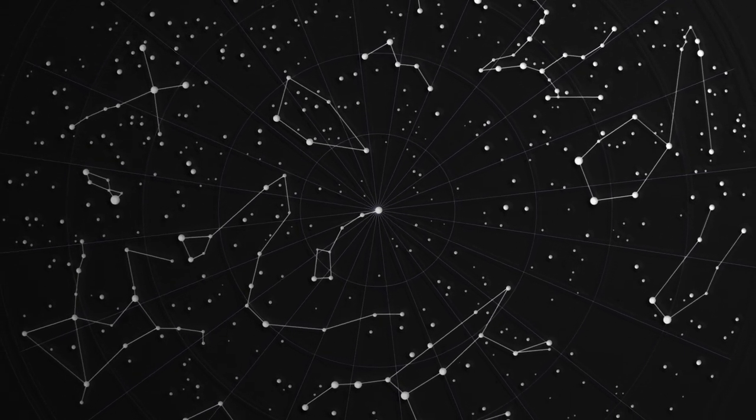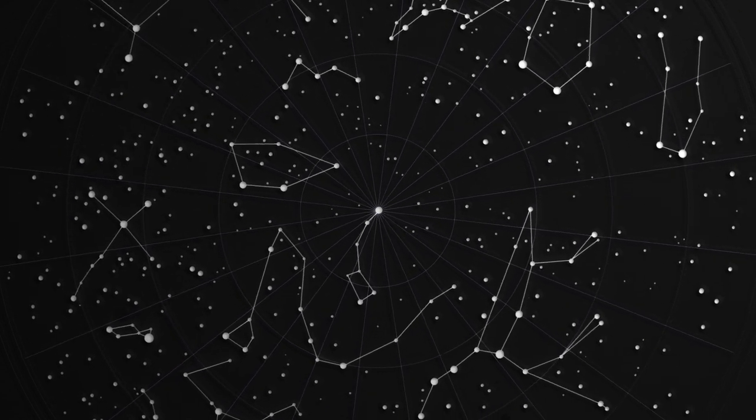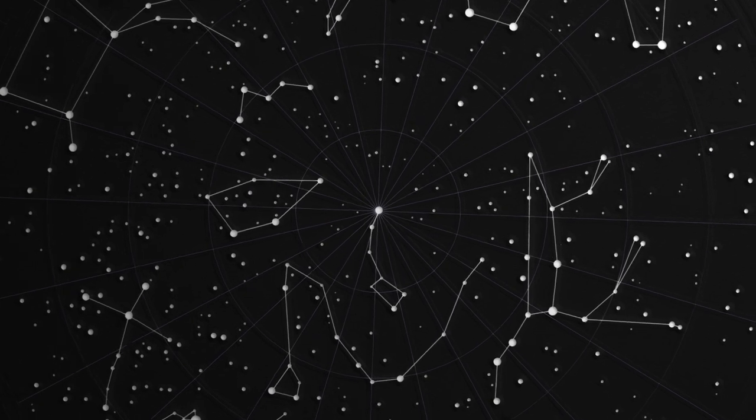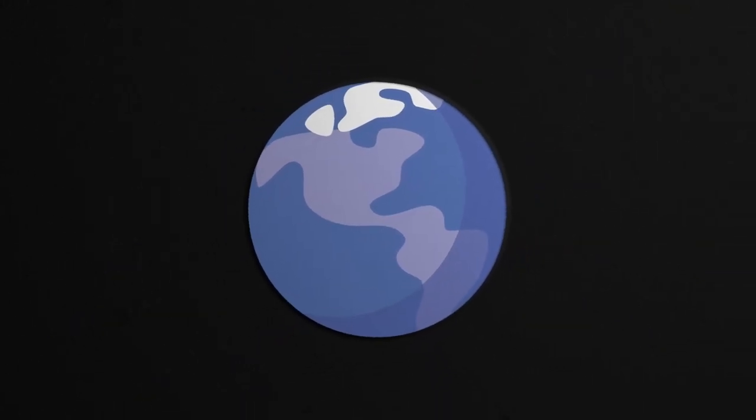When you're stargazing, you'll notice the sky changes. If you're out for an hour or two, you'll see the stars appear to rise and set. That's because our planet Earth is spinning, and as we spin, everything appears to move around us.